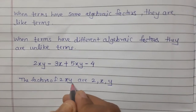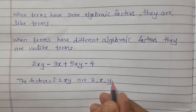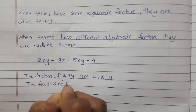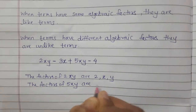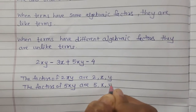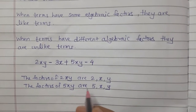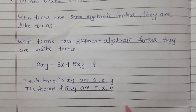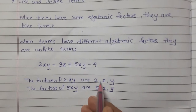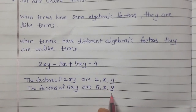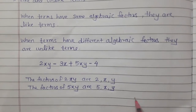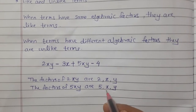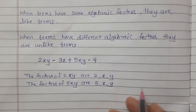The factors of 2xy are 2, x, and y. And the factors of 5xy are 5, x, and y. So their algebraic factors are the same — these algebraic factors are same. Hence, they are like terms.